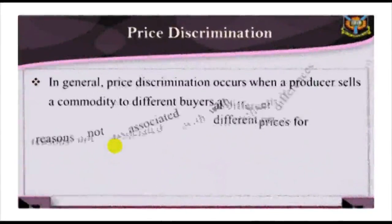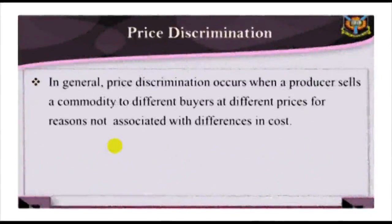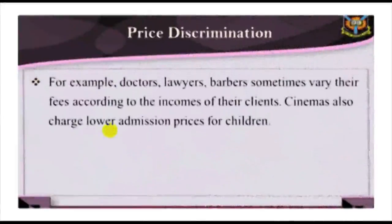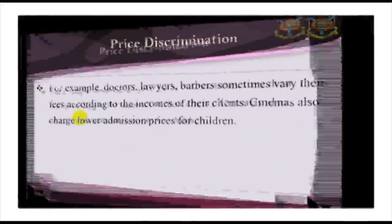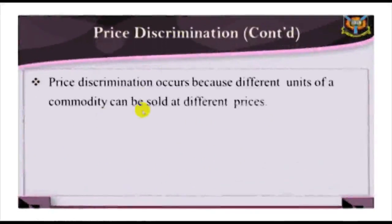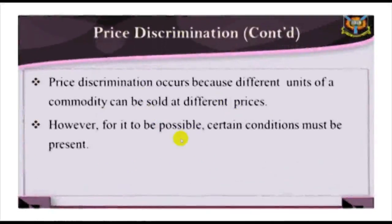Price discrimination occurs when a producer sells a commodity to different buyers at different prices for reasons not associated with differences in costs. For example, doctors, lawyers, and barbers sometimes vary their fees according to the income of their clients. Cinemas also charge lower admission prices for children.